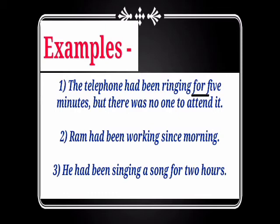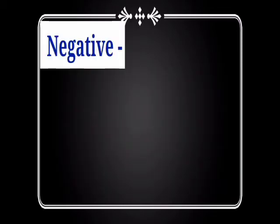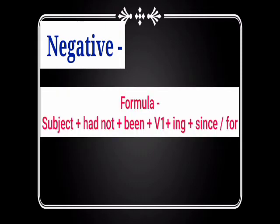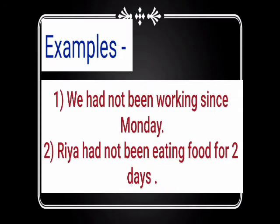For making negative sentences of past perfect continuous tense, we apply 'not' after 'had'. The formula will be: Subject + had not + been + first form of the verb with -ing + since or for. Examples: We had not been working since Monday. Riya had not been eating food for 2 days.